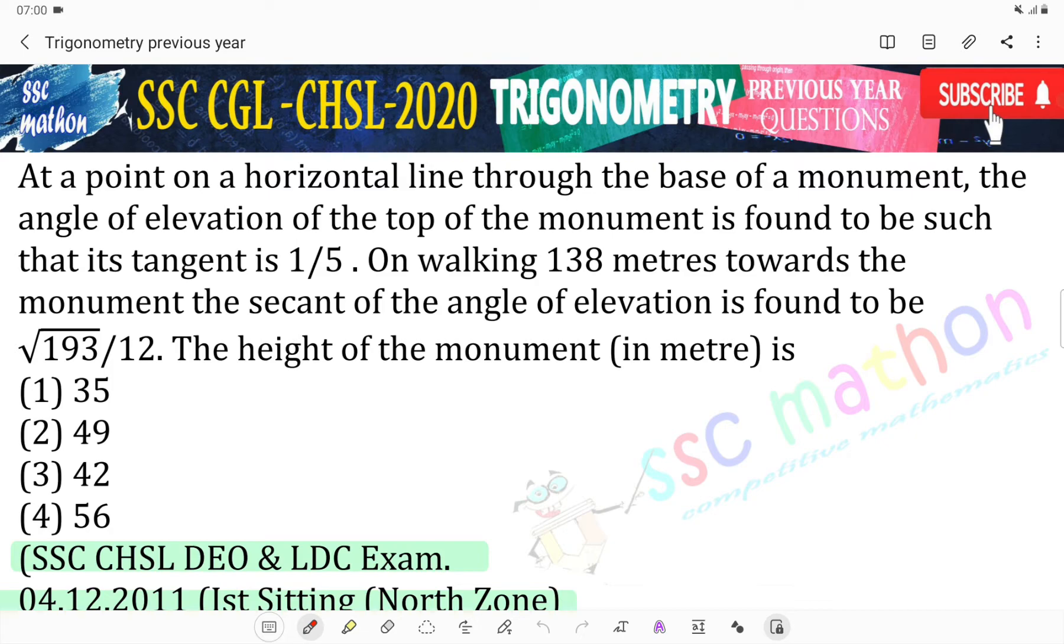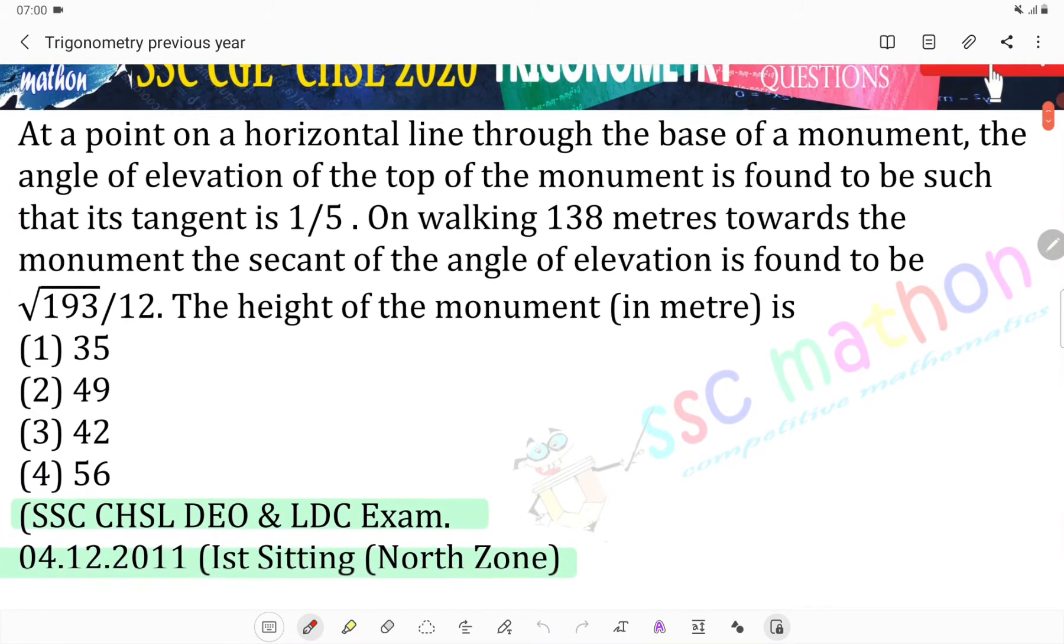At a point on a horizontal line through the base of the monument, we draw a monument here. We take a line where the tangent is 1/5. If you go further, on walking 138 meters towards the monument, we take a second angle.